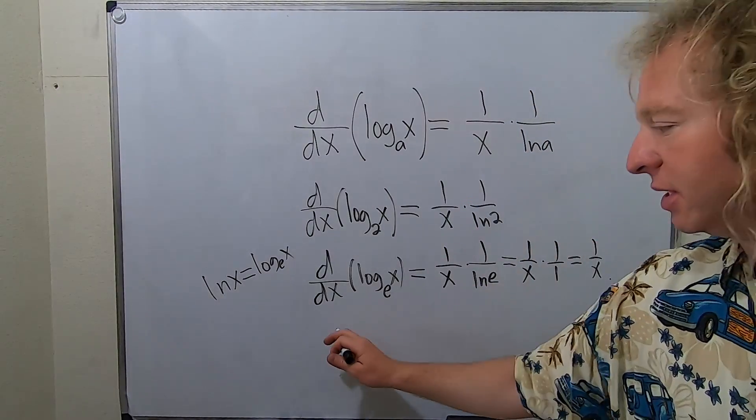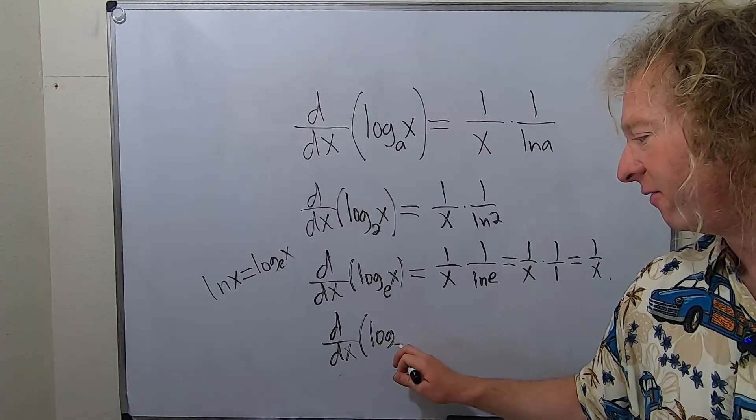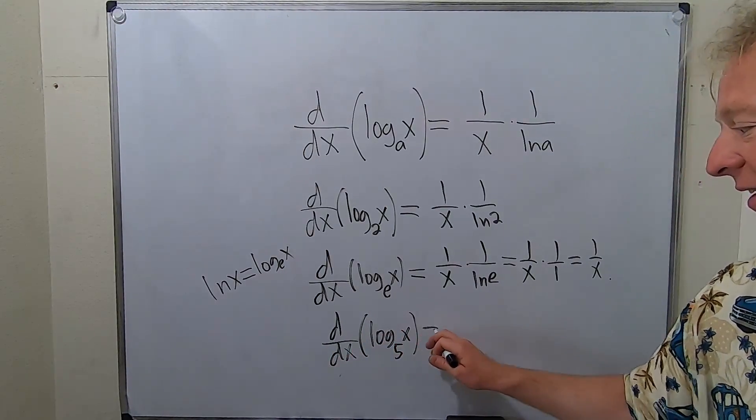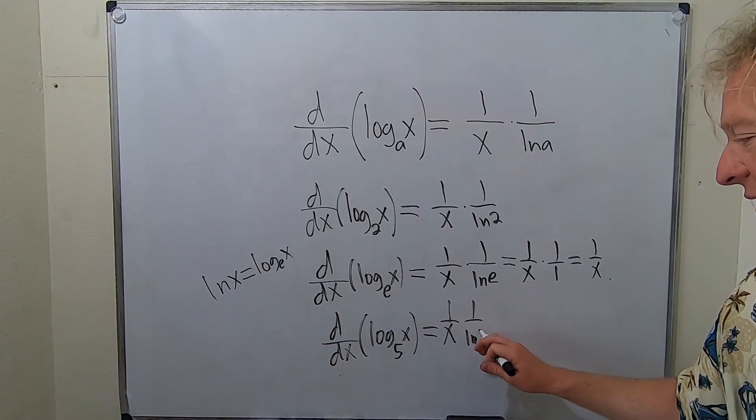Let's do one more. d/dx of log base 5 of x. I don't like 5s, but we'll do 5s. It's just 1 over x times 1 over ln 5. That's how you do it.